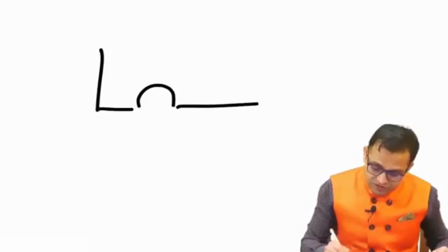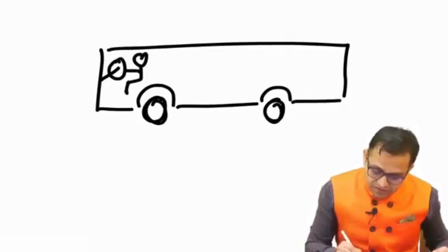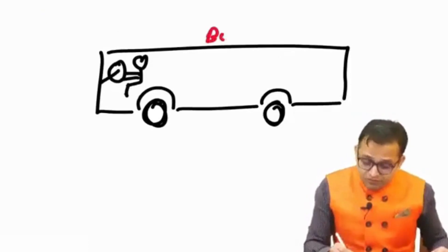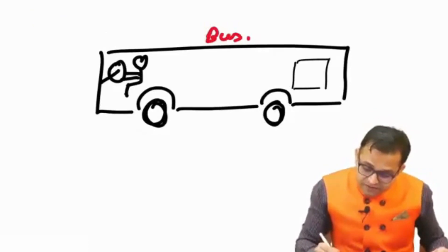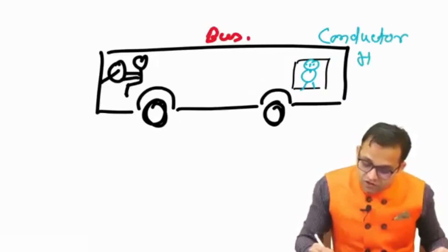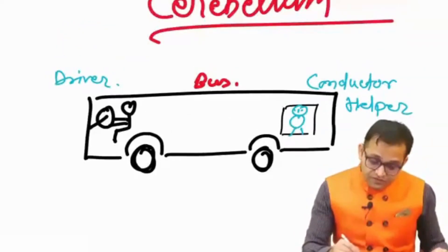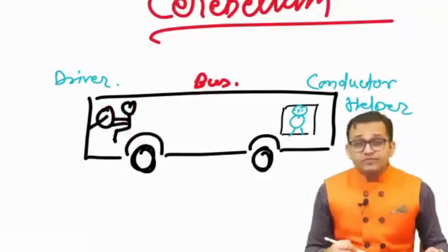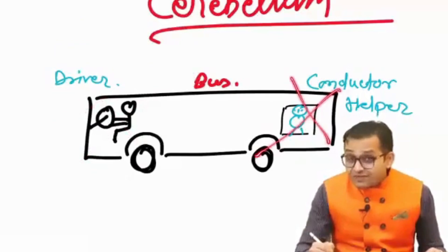Suppose this is a bus and here is the driver. If the driver is there, the bus will move. But on the back side, there is another person — the conductor, or helper. Now, if there is no driver, the bus will not move. But if the driver is there and the conductor or helper is not there, the bus will still move.